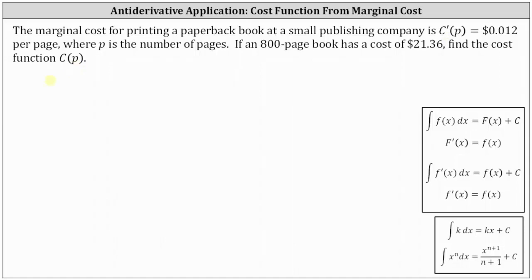We're given the marginal cost C'(P) equals 0.012, and we're also given that the cost of an 800-page book is $21.36, which indicates that C(800) = 21.36.